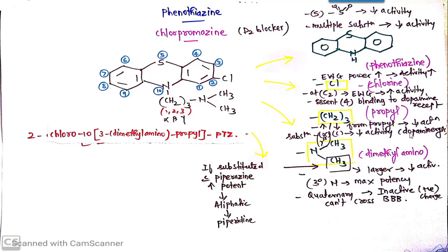It should be only a straight chain. Substituents if present at alpha, beta or gamma position, then the substituents present at any position will decrease the dopaminergic activity.